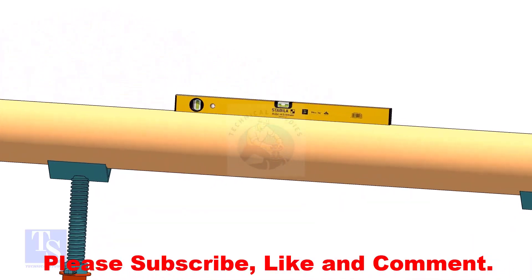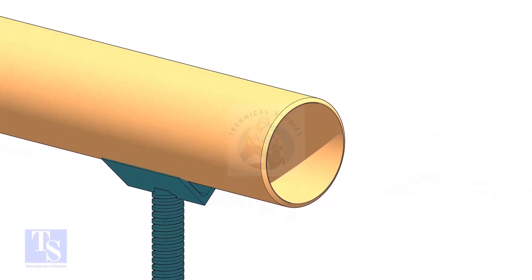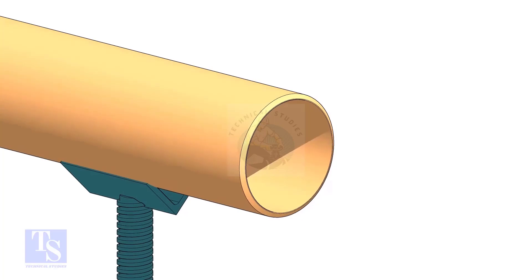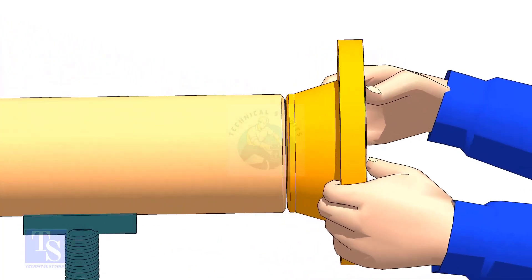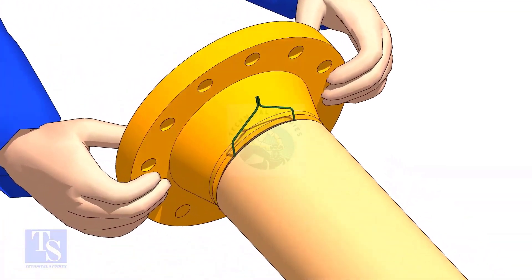Level the pipe. Hold the flange on the pipe face as shown. Put the gap rod in the joint. Look through the flange and the pipe and adjust the overlap.